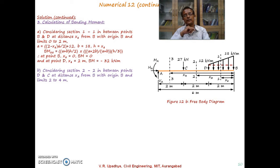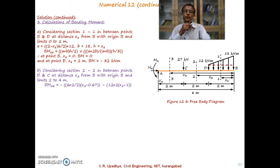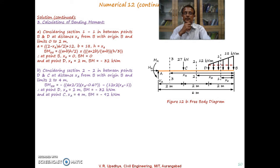For section 2-2 between D and C, with origin B and limits 2 to 4 meters. Substituting x2 = 2 m gives bending moment at D as minus 32 kN·m. At C with x2 = 4 m, the bending moment value is minus 92 kN·m.